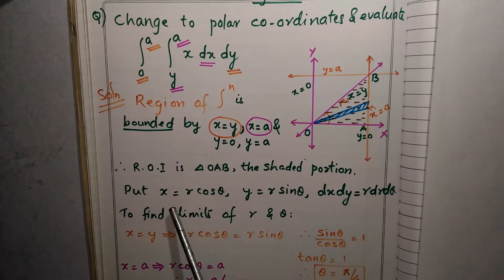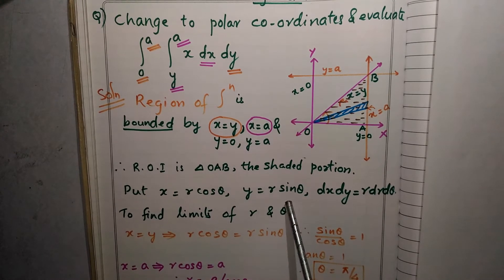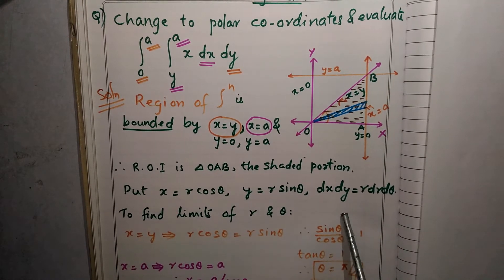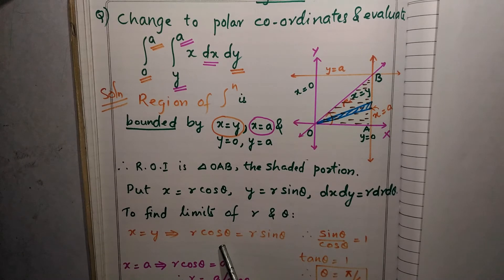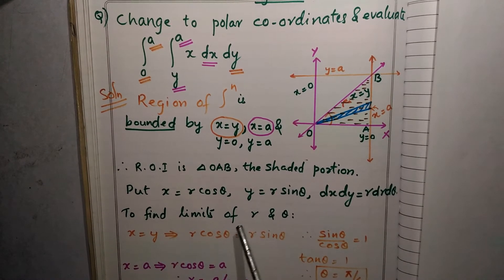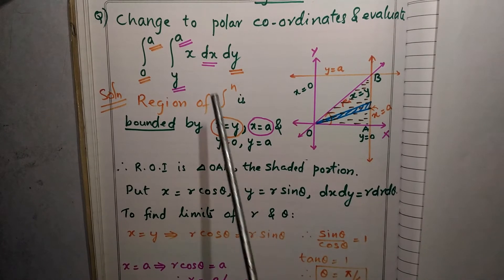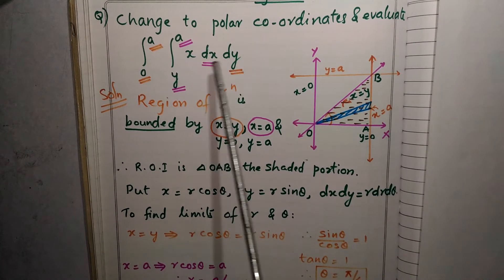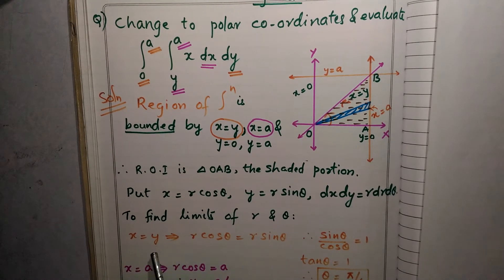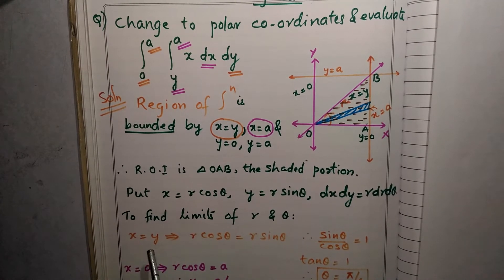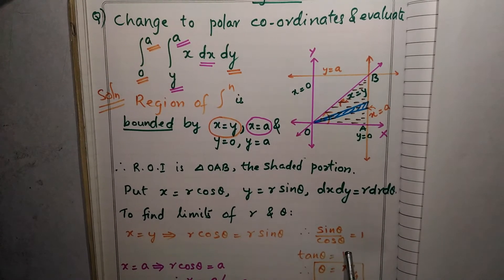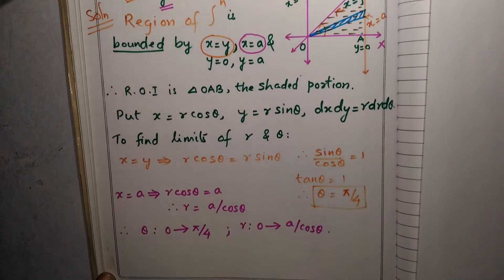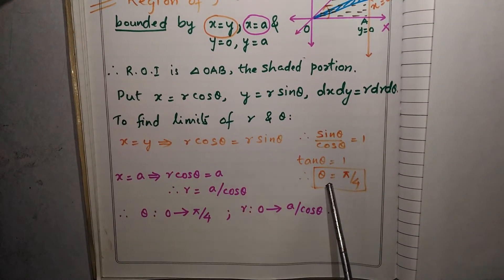Now, using X equal to R cos theta, Y equal to R sin theta, and dx dy equal to R dr d theta. To find the limits for R and theta, consider X equal to Y. When X equal to Y: X is R cos theta and Y is R sin theta, so sin theta upon cos theta equals 1, or tan theta equals 1, which gives theta equal to pi by 4, because the value of tan(pi/4) is 1.